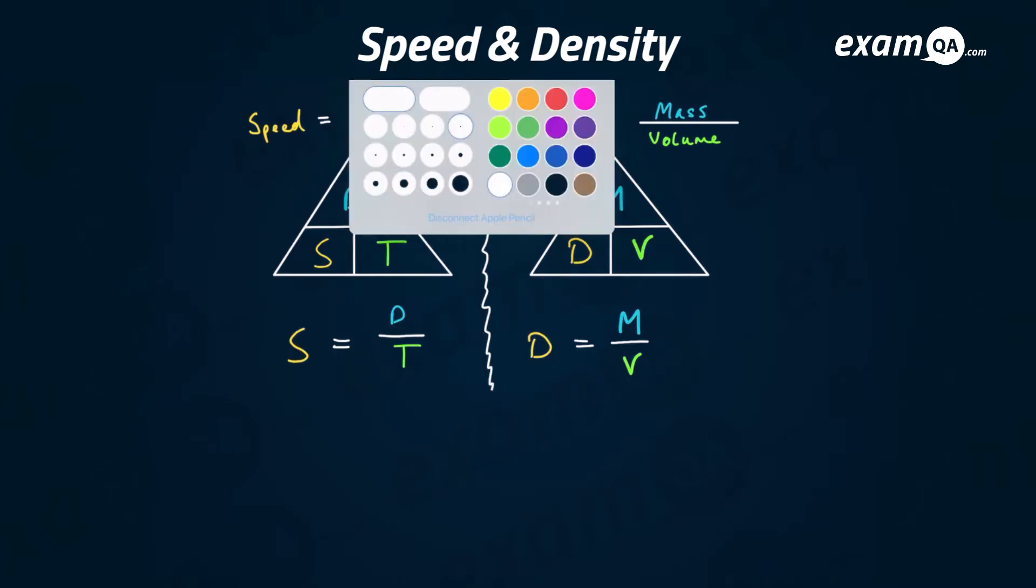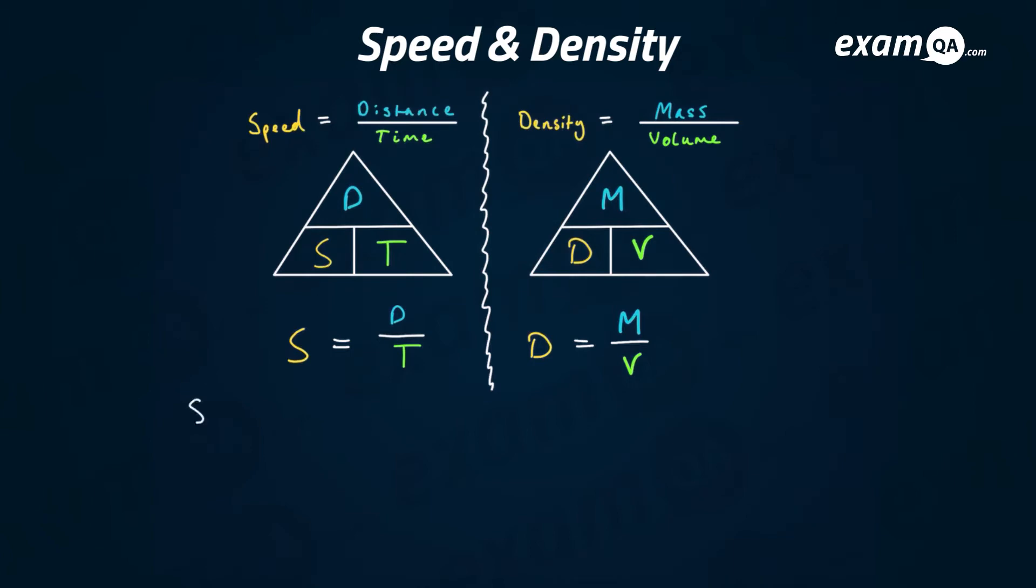So say for example they say work out the speed of a train driver if he travelled two kilometres in 0.1 hours. If we use the triangle method we want to work out s so we'll cover s and we've got d over t, so we just have 2 over 0.1 and you'll get 20. We had kilometres and hours so that means 20 kilometres per hour.